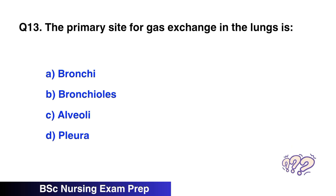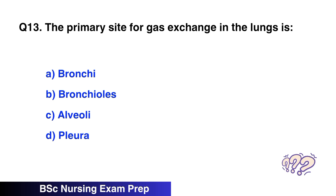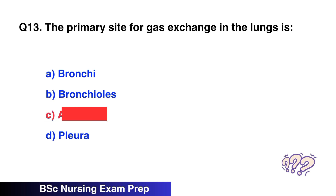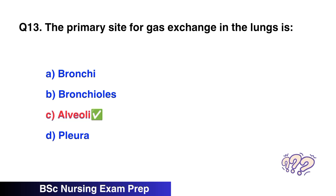Question 13. The primary site for gas exchange in the lung is? The correct option is C, alveoli.